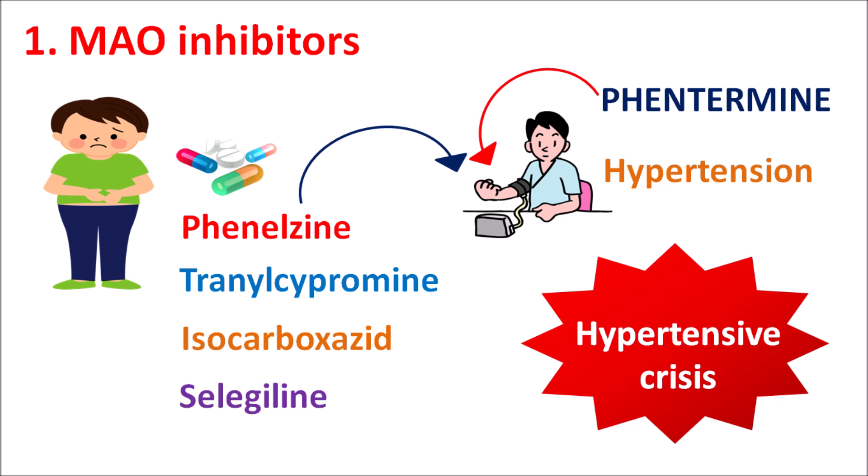Phentermine should be avoided in patients taking MAO inhibitors. If required, a 14-day gap should be maintained between the use of MAO inhibitors and phentermine to avoid development of hypertensive crisis. Before initiating phentermine therapy, patient history should be reviewed, and if any MAO inhibitor was administered within 14 days, phentermine should not be initiated.